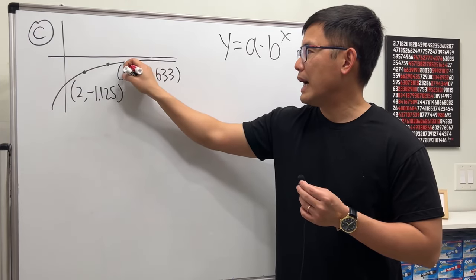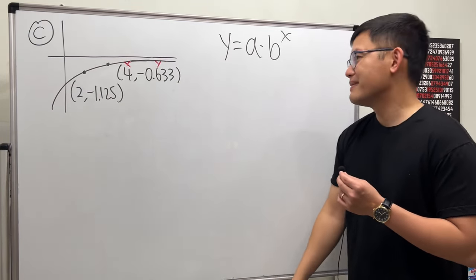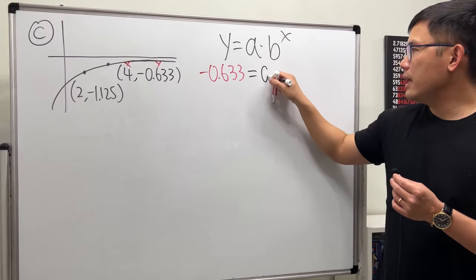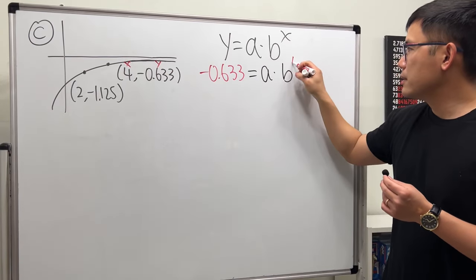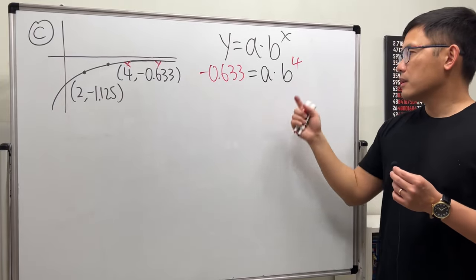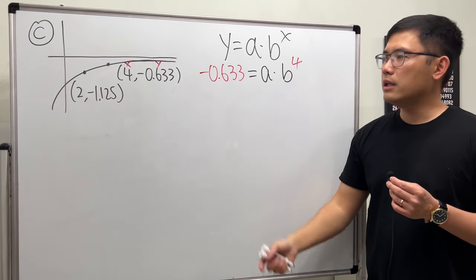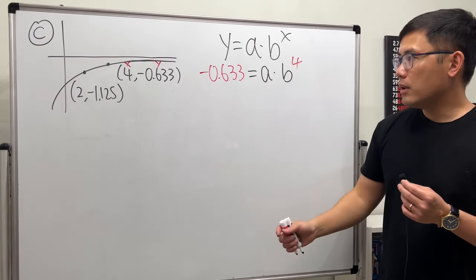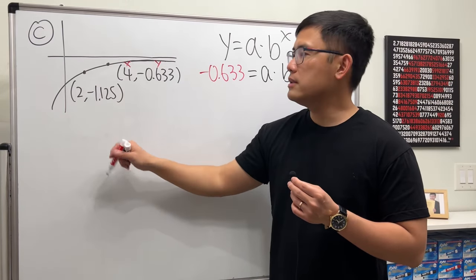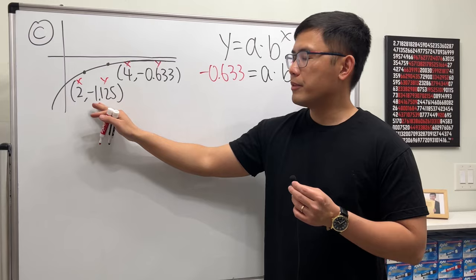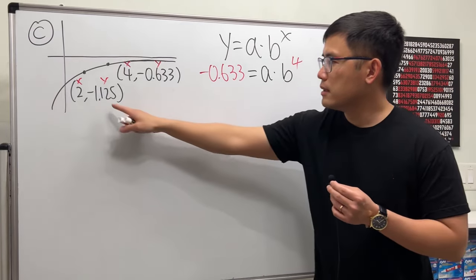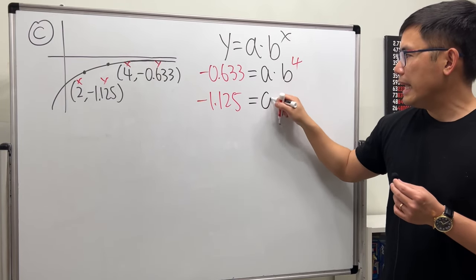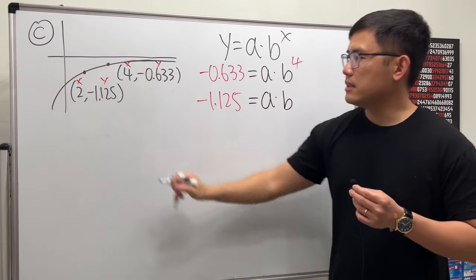Here, if we don't know the y-intercept, here's a tip. Go ahead and start with the point that has the bigger x value. So, I'm going to use this right here. I will tell you why this is easier in a minute. Let me put this right here for y, and then we will have a times b and the x is 4. And like earlier, we don't know b to the 4th power. If we don't have the y-intercept, this right here is slightly more difficult. But let's go ahead and look at the other point. Again, this is x and this is y. I'm going to plug them into this as well. So, this goes here. Negative 1.125. That is equal to a times b and the x is 2.